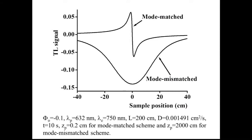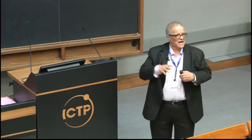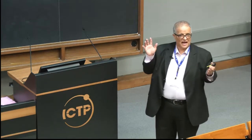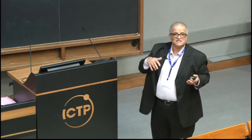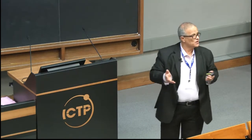When you use mode mismatch, it means the probe beam is collimated — absolutely collimated — for all these different positions of the cell as you scan around the focal waist of the pump. You get the maximal signal clearly. If you have a negative lens you see it's negative; a positive lens you see it increases. It's very clear with mode mismatch — no confusion. However, in real life mode mismatch produces more noise.